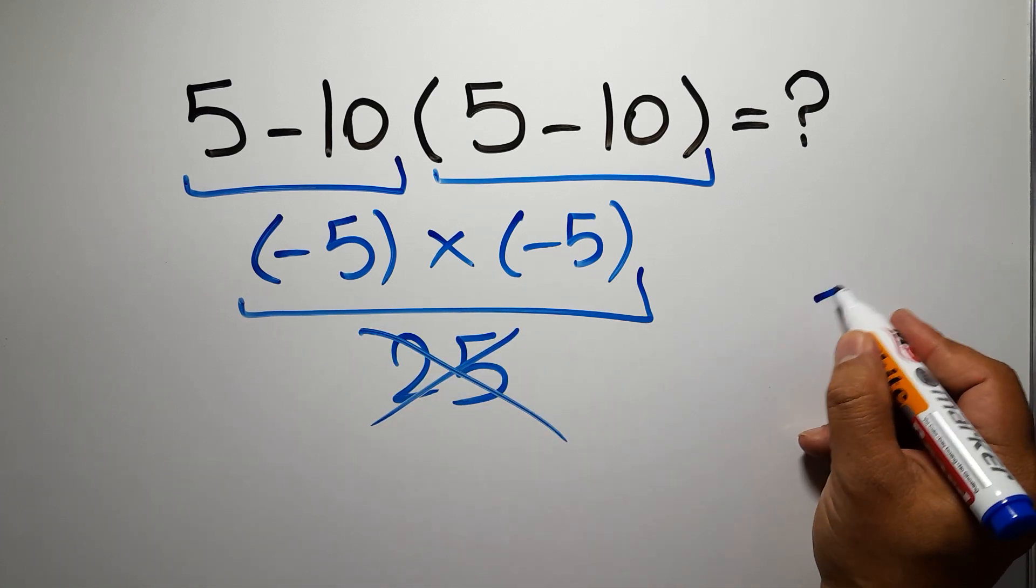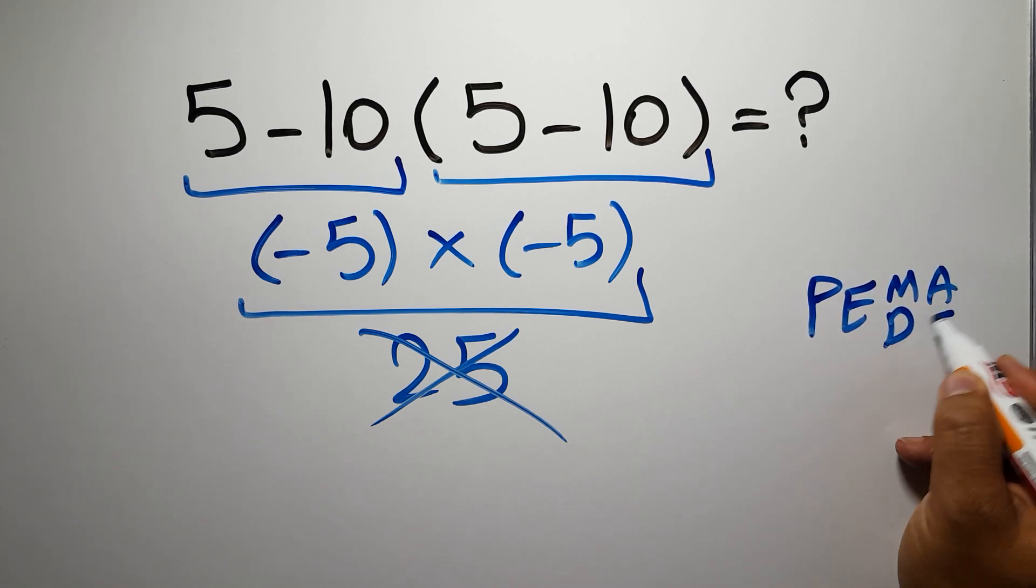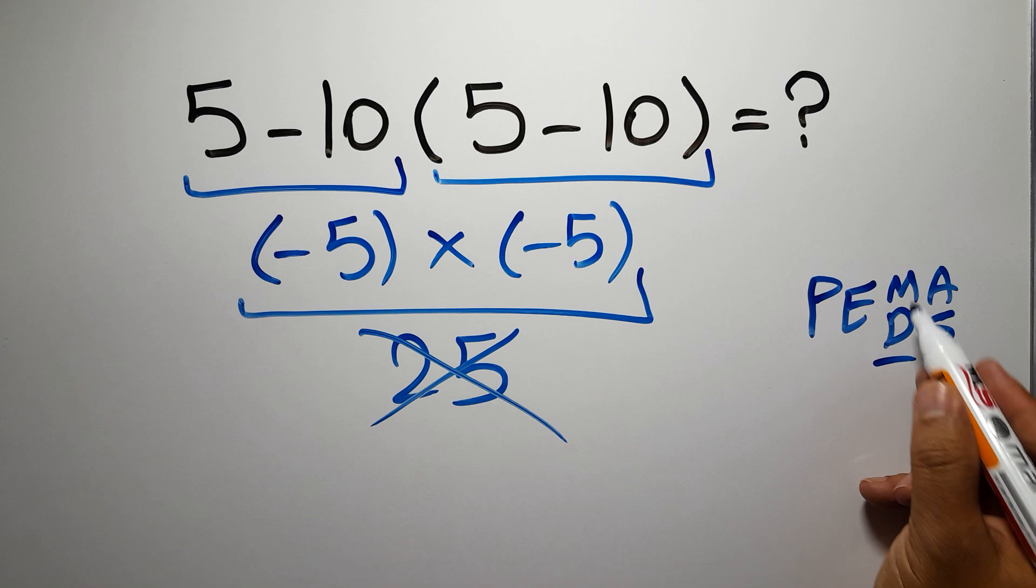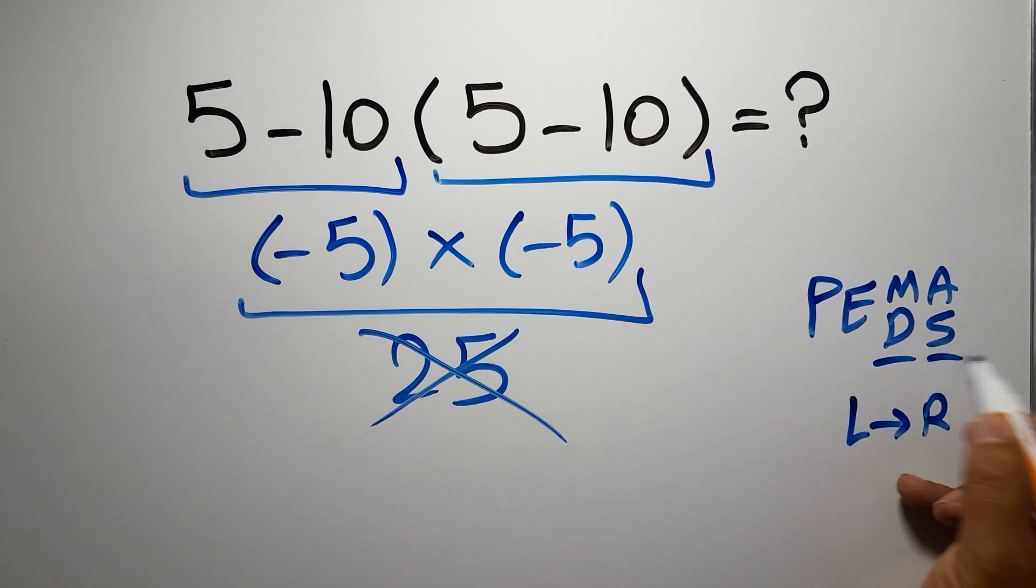First we have to do parentheses, then exponents, then multiplication or division, and finally addition or subtraction. Remember that multiplication and division have equal priority and we have to work from left to right, and the same applies to addition and subtraction.